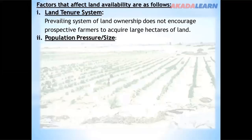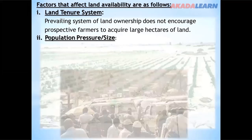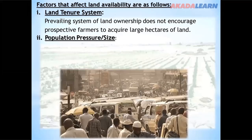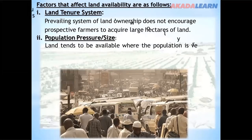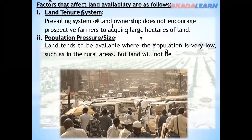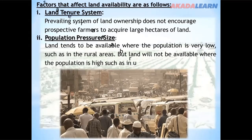We have population size or pressure. Land tends to be available where the population is very low, such as in the rural areas, but land will not be available where the population is high, such as in urban areas.